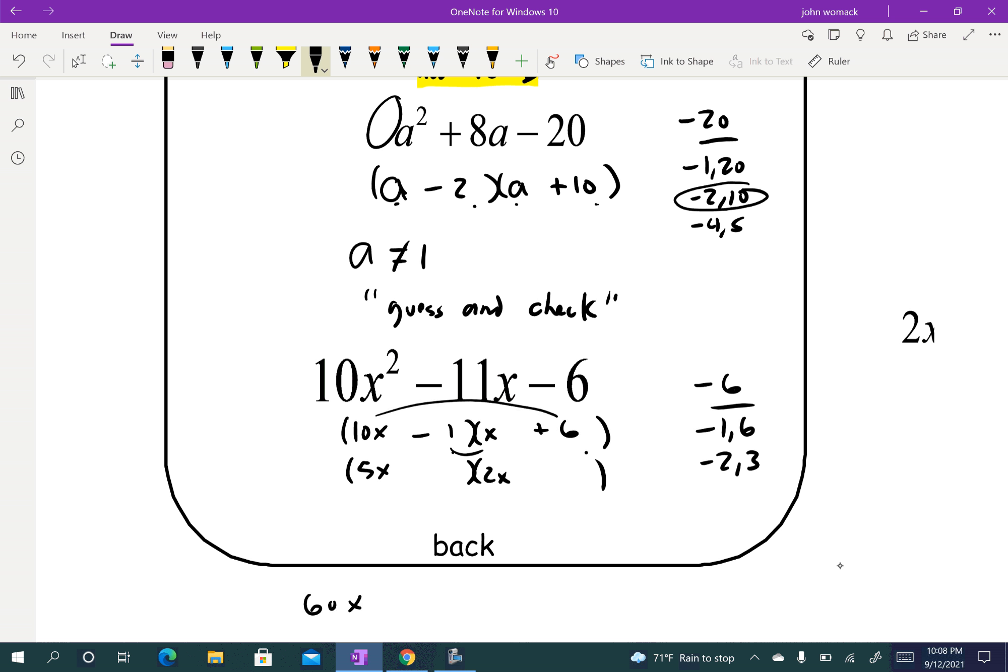I could try the negative 1 and 6. And the way we check it is we times the outside two, that's 60x, and the inside two is minus 1x. That's definitely not minus 11 when we combine them together. I could try switching them around. That would be 10x minus 6x, that's still not negative 11. We could try the 6 and 1 down here. So I go 5x minus 12x, that gives me minus 7x. That's close but not what we want.